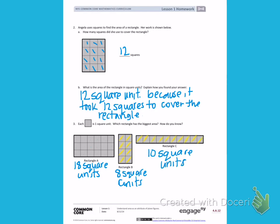Look at each of those rectangles and decide which rectangle has the biggest area. Explain how you know by talking about how many squares it takes to cover the rectangle.